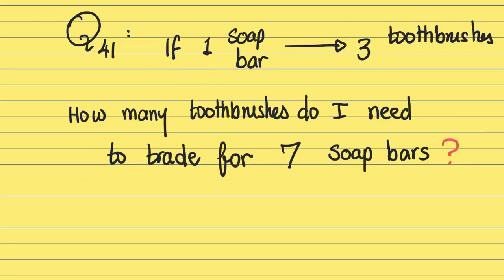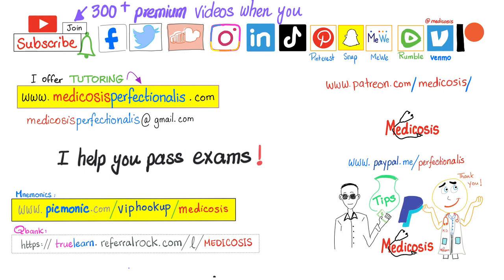Question of the day. If one soap bar could be traded for three toothbrushes, how many toothbrushes do I need to trade for seven soap bars? Let me know the answer in the comment section. After these four videos of introduction, in the next video we'll start actual chemistry. So please subscribe, smash like, hit the bell. Click the join button, choose the highest tier to gain instant access to more than 300 premium videos. You can support my channel here or here. Go to my website to download my notes, cases and courses. Or if you want me to personally tutor you. Be safe, stay happy, study hard. This is Medicosis Perfectionalis where medicine makes perfect sense.